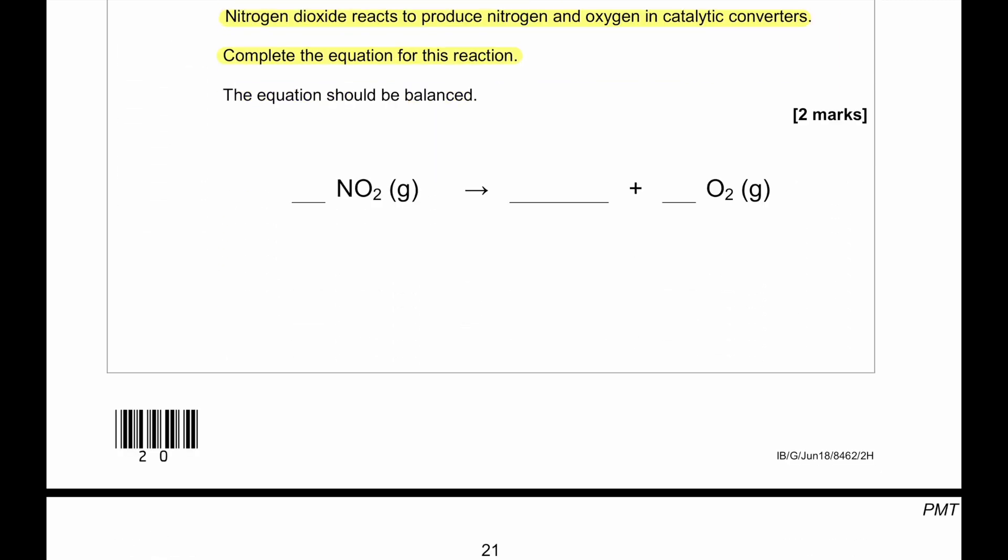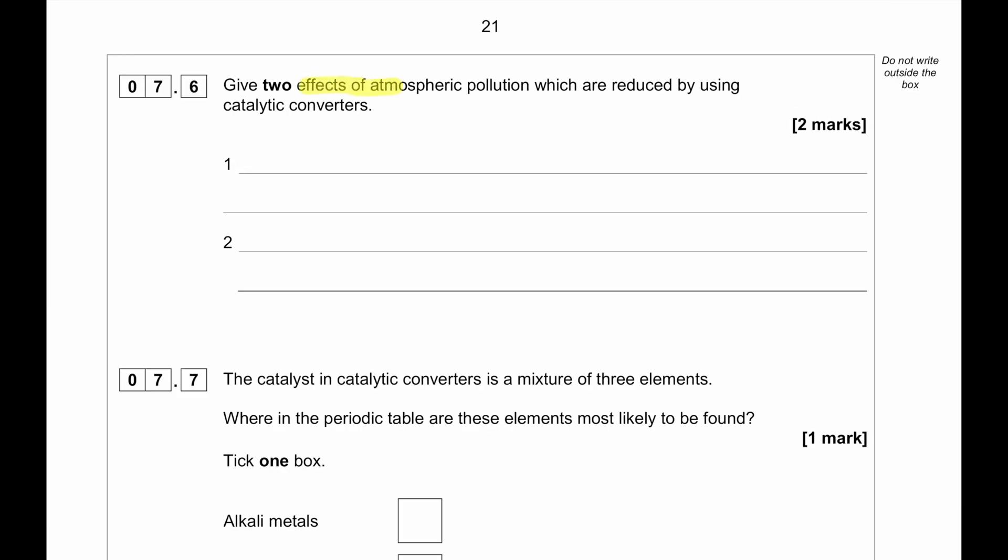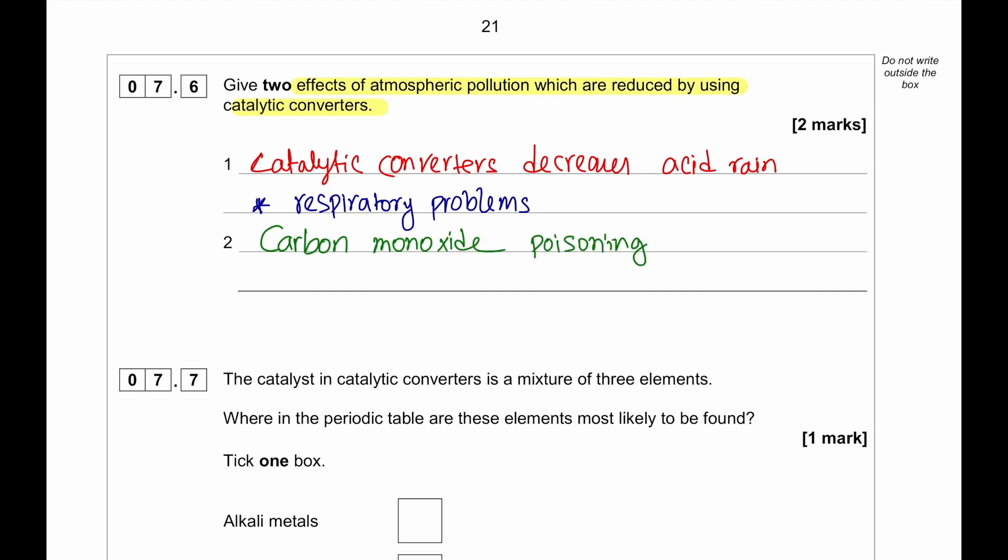Catalytic converters are fitted in car exhaust to reduce the amount of pollutants released into the atmosphere. Nitrogen dioxide is an oxide of nitrogen. Nitrogen dioxide reacts to produce nitrogen and oxygen in catalytic converters. Complete the equation for the reaction. When we have nitrogen dioxide, we convert it into nitrogen and we produce oxygen. So 2 NO2 produces N2 plus 2 O2 gas. Give two effects of atmospheric pollution which are reduced by using catalytic converter. Since we are reducing the amount of nitrogen dioxide, we can reduce acid rain. Also, the acidic oxides reduction will decrease respiratory problems in people. Since we are decreasing the amount of carbon monoxide using catalytic converter, that means carbon monoxide poisoning will be less. People are going to suffer from less respiratory problems. And also, because we are reducing the amount of carbon produced by the engine, so we are going to reduce the amount of global smog or global dimming.